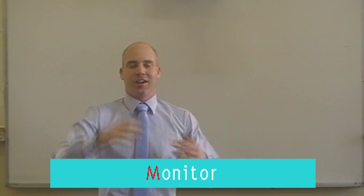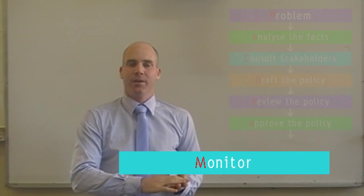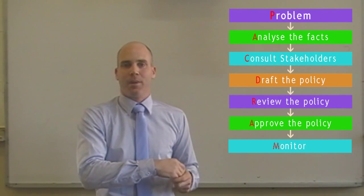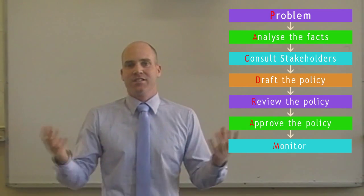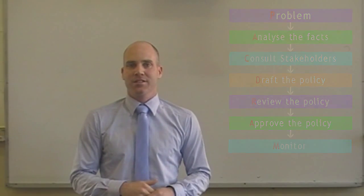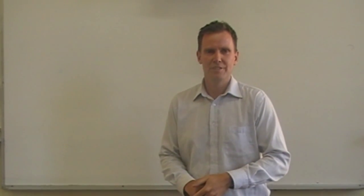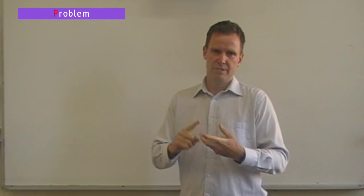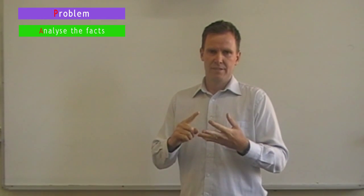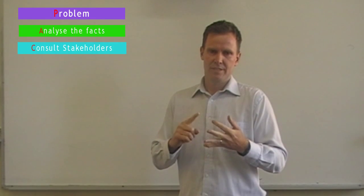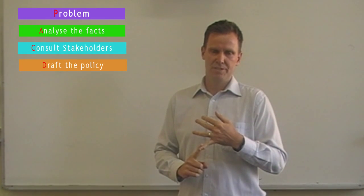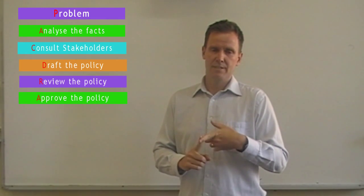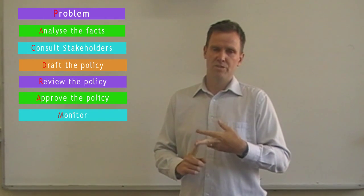Our last step is M, which is Monitor and review results. We want to look at whether, once this policy has been implemented, it's actually helping us solve the problem. We had a problem with an abundance of emails — we want that to be reduced, and we can see whether it's been successful. If it hasn't, we can make any necessary amendments. Reviewing those seven steps of PACTRAM again: P — Problem or issue; A — Analyse the facts; C — Consult key stakeholders; D — Draft a policy document; R — Review that document with stakeholders; A — get it Approved by management; M — Monitor and review going forward.